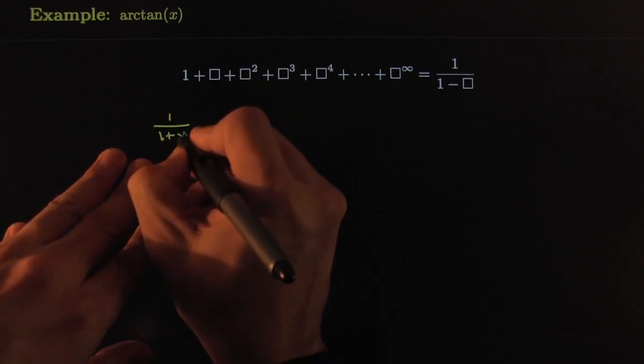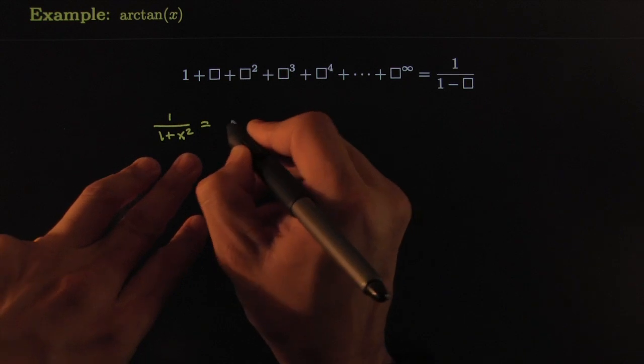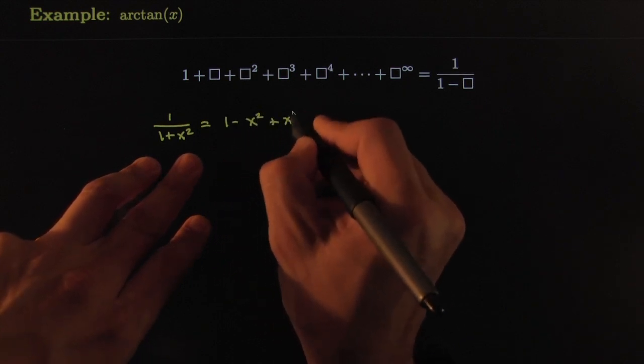So we just saw earlier that we had 1 over 1 plus x squared—this was the previous example—is equal to 1 minus x squared plus x to the fourth minus x to the sixth plus x to the eighth and so on and so forth, right?